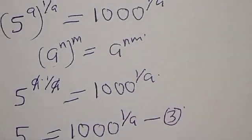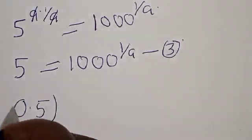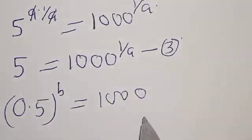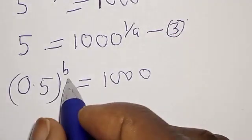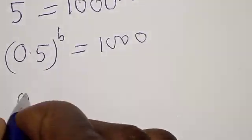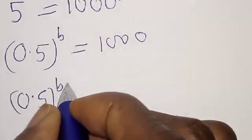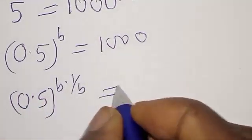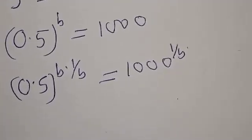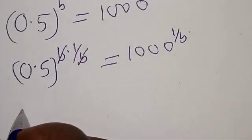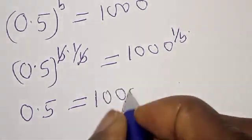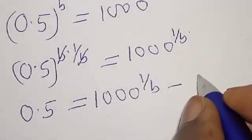Also, from equation 2, 0.5 raised to power b is equal to 1000. Then, let's multiply the exponent of both sides by 1 over b. That is, 0.5 raised to power b multiplied by 1 over b is equal to 1000 raised to power 1 over b. Then this one will cancel, so we have 0.5 is equal to 1000 raised to the power 1 over b. Let's call this equation 4.